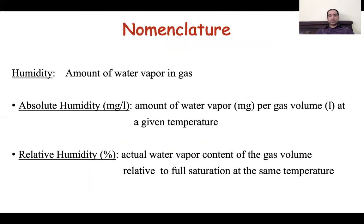Before moving further, we should note certain terms. Humidity is the amount of water vapor present in a gas. It is of two types: absolute humidity and relative humidity. Absolute humidity is the amount of water vapor in milligrams per liter of gas at a given temperature. Relative humidity is the actual amount of water vapor present in the gas relative to the maximum it can hold at that temperature, and is expressed as a percentage.